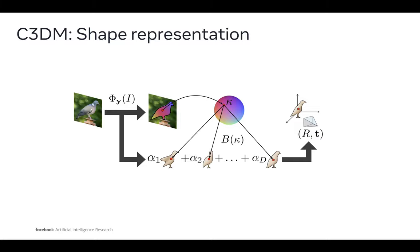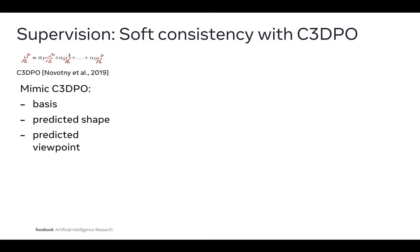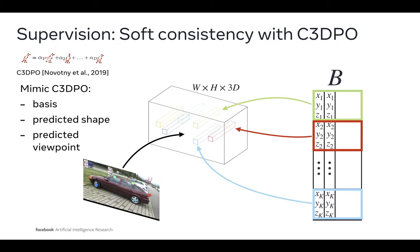The reconstructed points can be moved to the camera coordinates using the predicted viewpoint. This reconstruction in camera coordinates is used to define losses. C3DM can train with 2D supervision only, in large part because it enforces consistency with C3DPO, a non-rigid structure from motion method that lifts 2D keypoints to 3D. During training, we run C3DPO on the provided keypoints and use its output to supervise C3DM's predicted shape, viewpoint, and blend shapes.